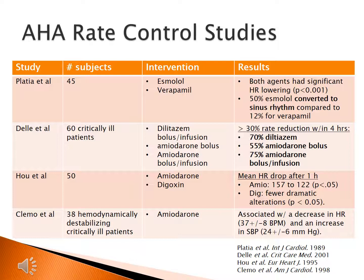In a study by Dell's group, 60 critically ill patients received either a diltiazem 25 mg bolus with a 20 mg/hour continuous infusion, an amiodarone 300 mg bolus alone, or an amiodarone 300 mg bolus followed by a 45 mg/hour infusion for 24 hours. Success was defined as greater than 30% rate reduction within four hours. No significant difference was found between the three groups; however, diltiazem was discontinued more frequently for hypotension. The conclusion is that for critically ill patients, amiodarone appears as effective as diltiazem and may cause less hypotension, and amiodarone bolus plus infusion is preferred.